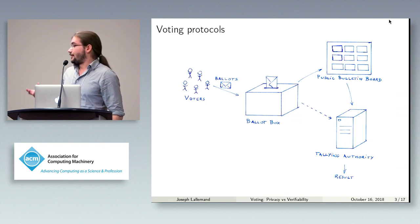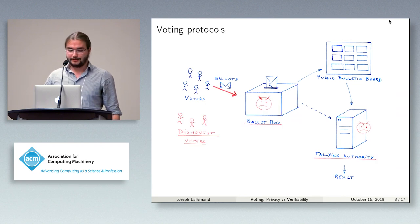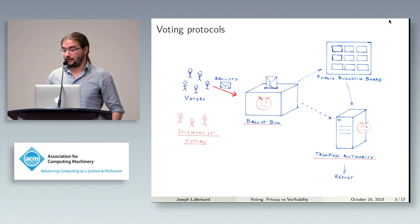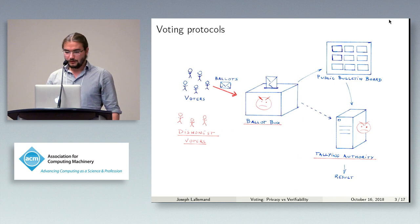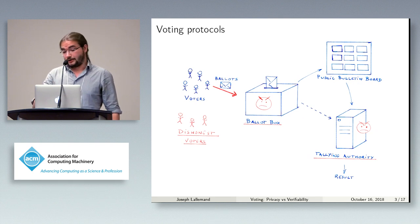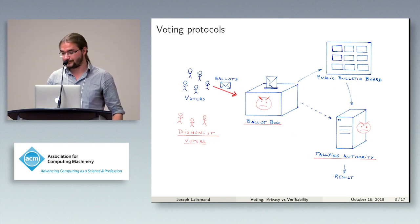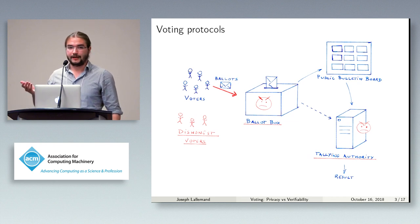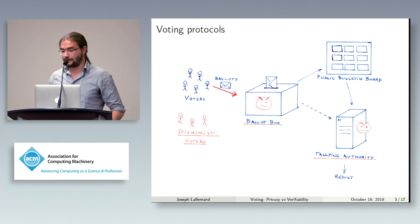The problem with electronic voting is that we have a complicated attacker model, because there can be dishonest voters trying to interfere with the election process. The attacker may also control the network — the channel between the voters and the ballot box — which would allow them to drop some ballots so that they never reach the ballot box. The attacker can also control, in some cases, the ballot box itself, which would let them change the content of the box. Finally, the attacker could also control the tallying authority, which would let them publish a false result for the election.